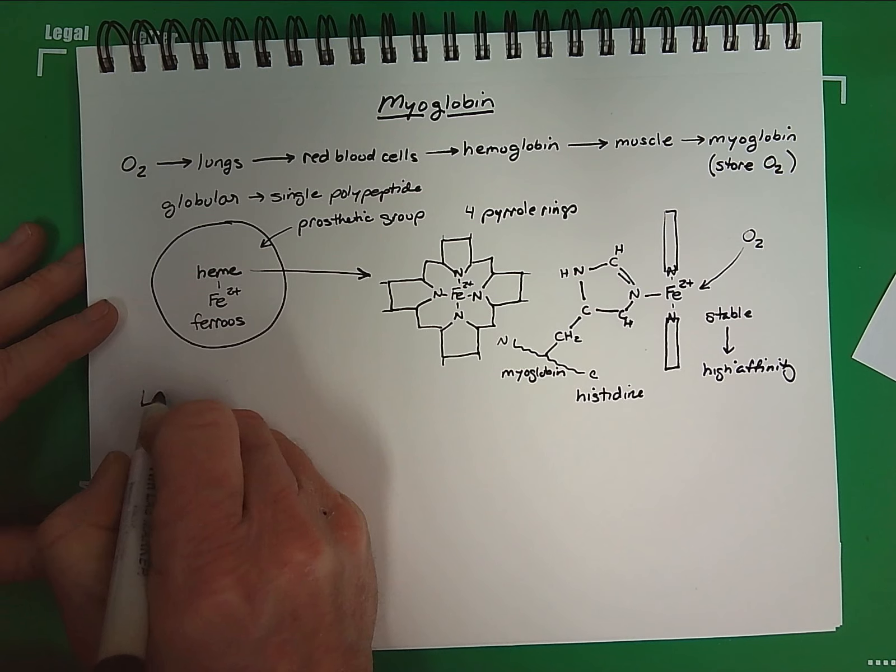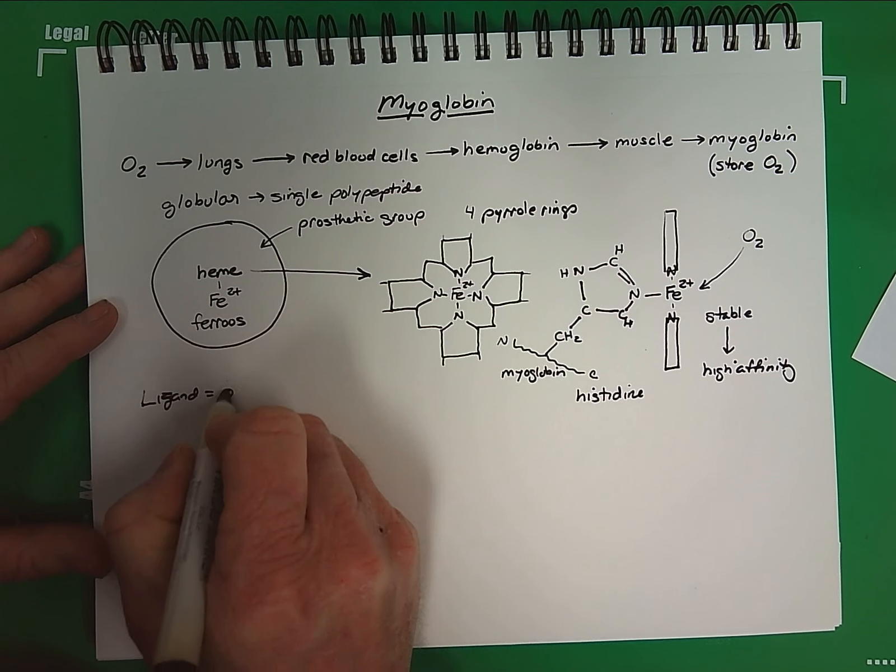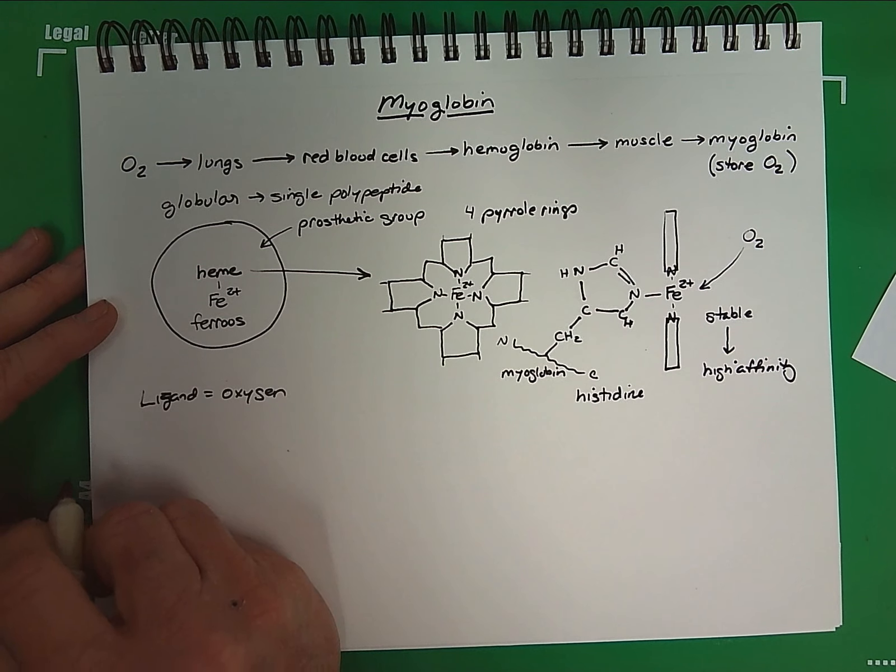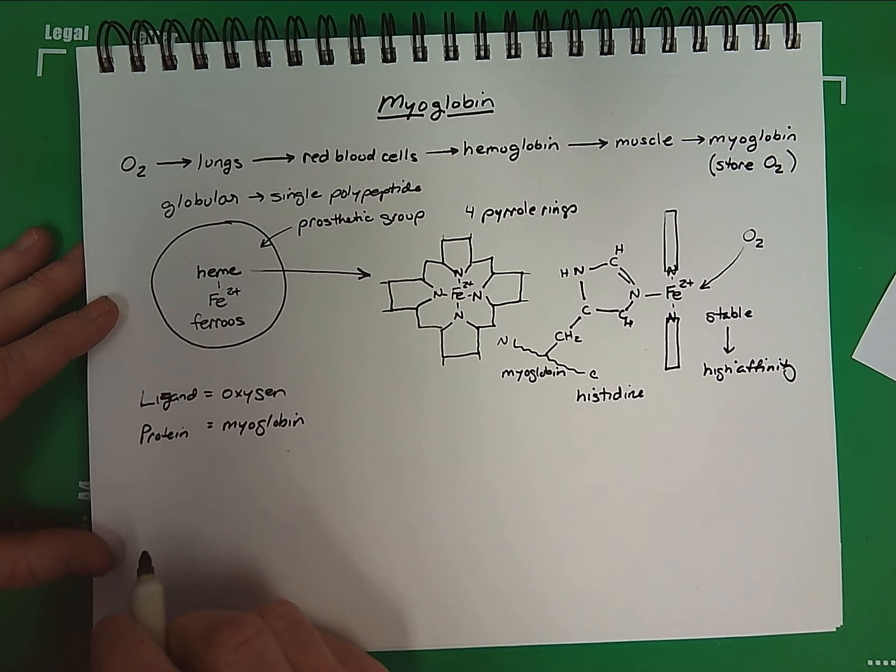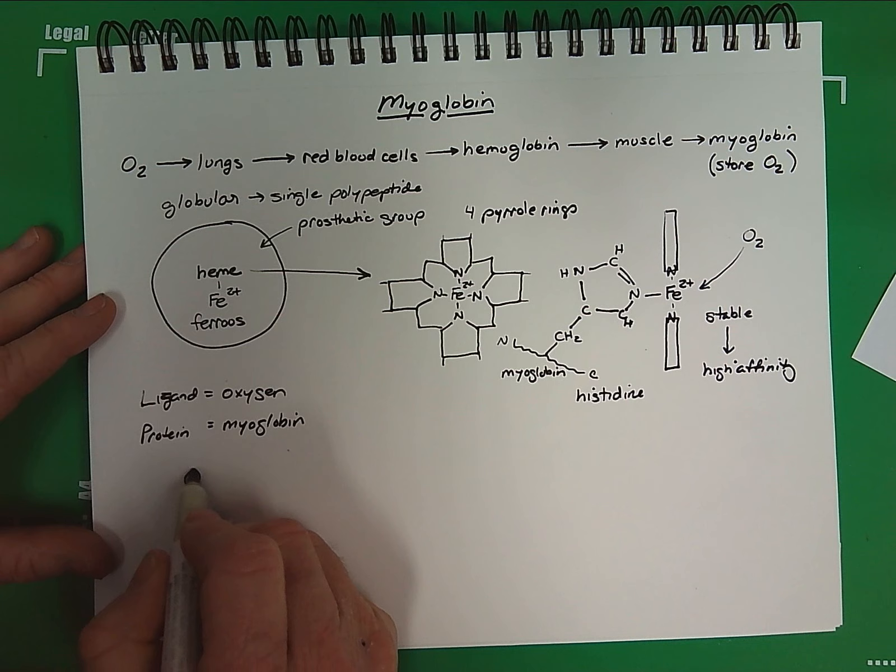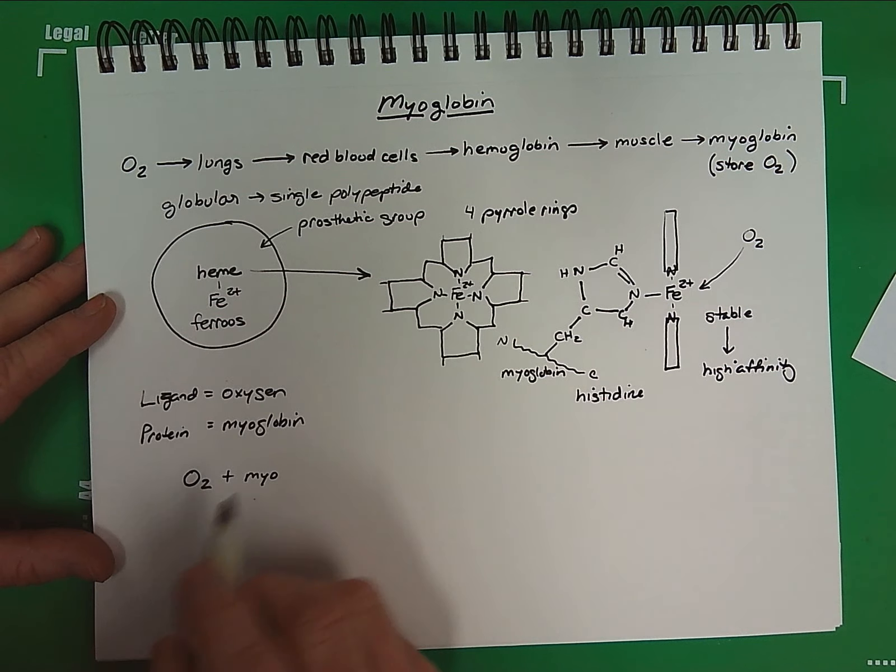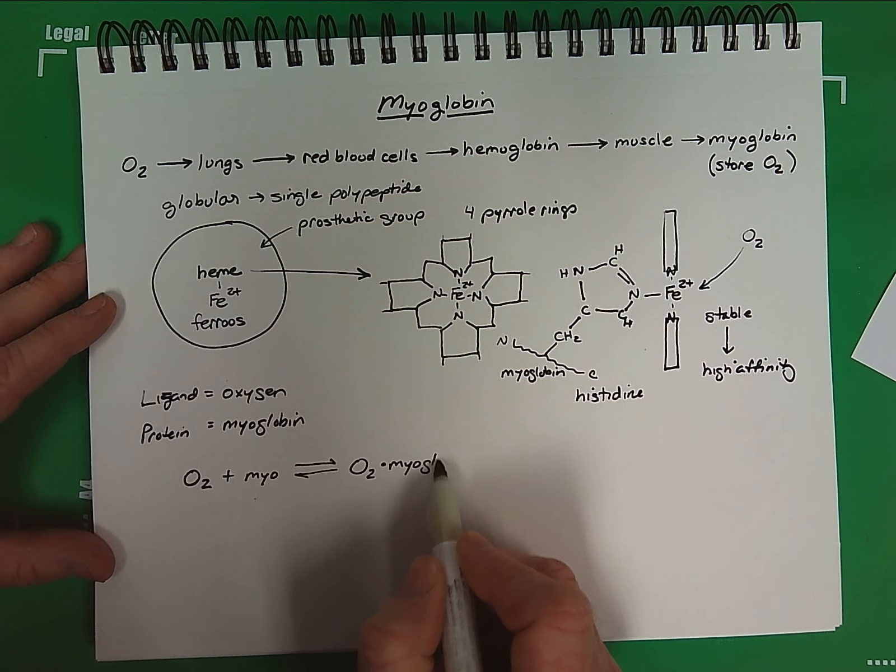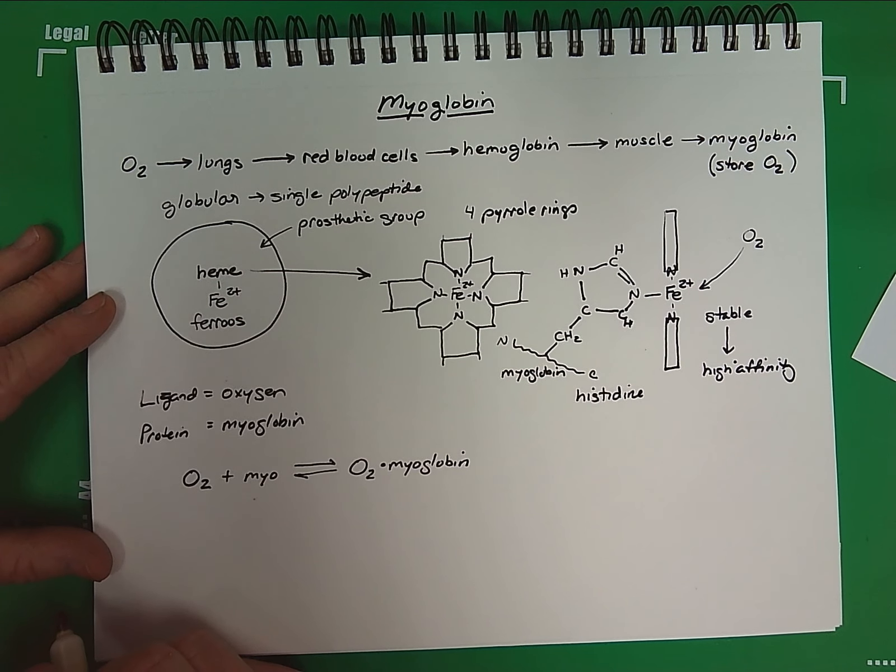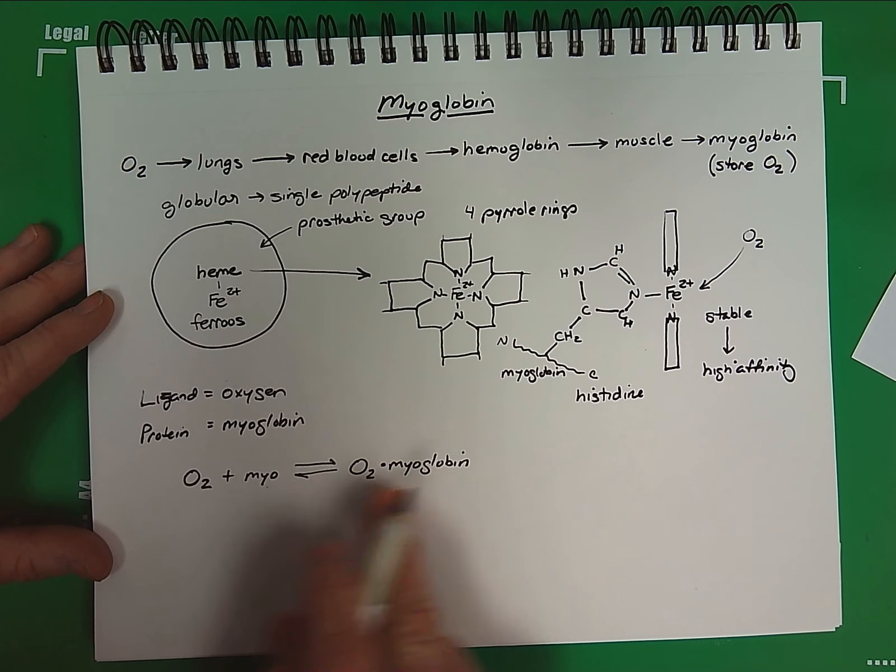So in order for this to be true, we need to have our myoglobin have very high affinity for oxygen binding. So recall our kinetics. If we say our ligand equals, in this case, oxygen, and if our protein equals myoglobin, the kinetics of this reaction is going to be oxygen plus myoglobin to form the oxygen myoglobin complex.